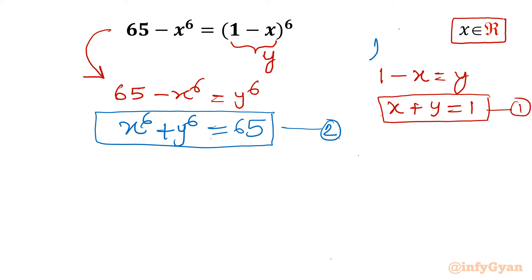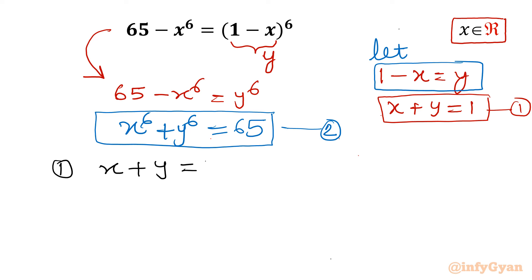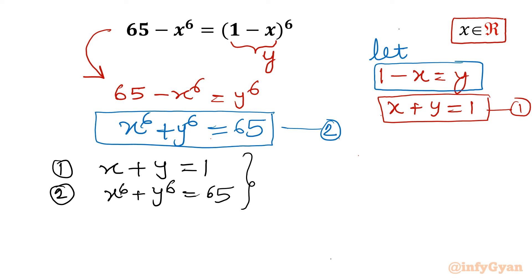Remember our substitution was 1 minus x equal to y. Now I will frame one new system of equations: first equation x plus y equal to 1, and second equation x power 6 plus y power 6 equal to 65. Let me consider one more substitution which will be required — it is the product of x and y. I will consider x times y equal to a.